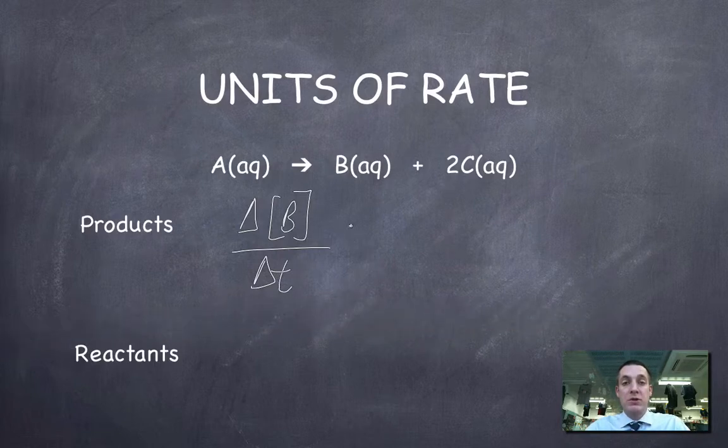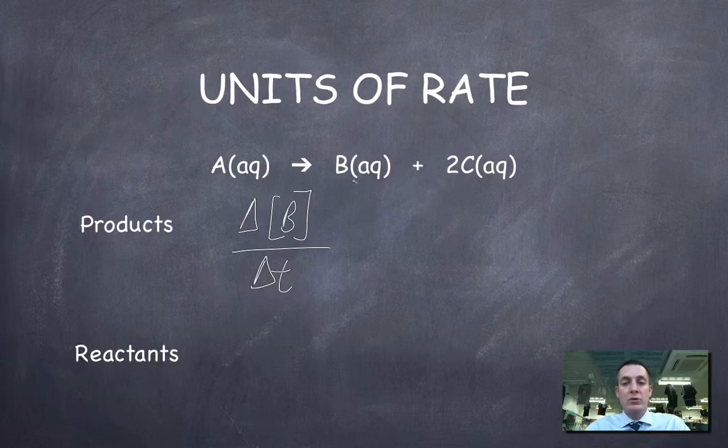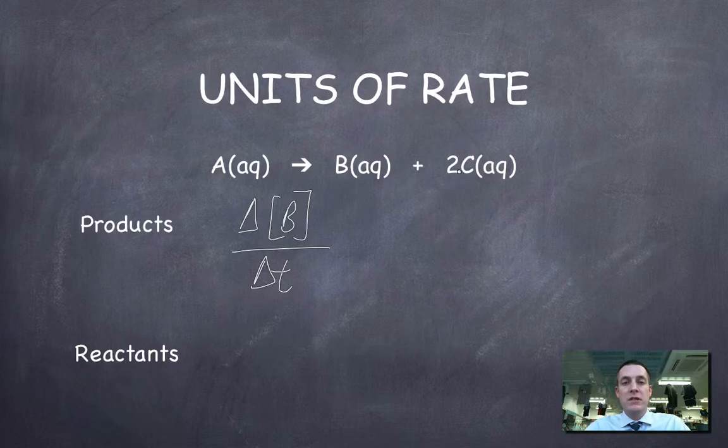It's usually a positive quantity, just like any other speed. But if we look here, I could also express it in terms of C, but because the concentration of C will change twice as fast as the concentration of B.